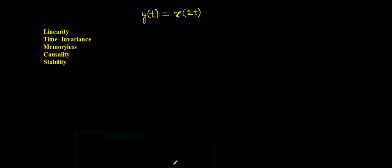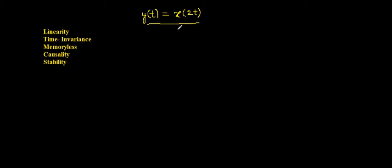Welcome to NG Classes YouTube channel. In this video we will consider an example on properties of a system. The system being considered is y(t) = x(2t). The task is to determine if this system is linear, time invariant, memoryless, causal, and stable.